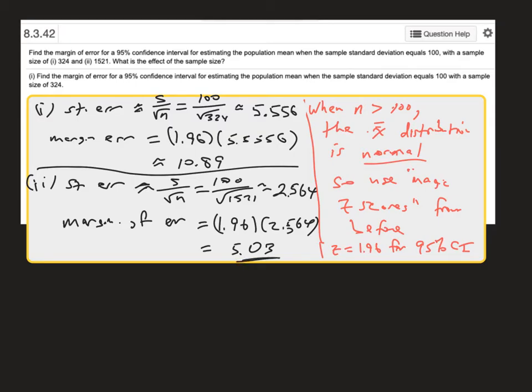So what's happened is the only difference in these two problems was the sample size. The margin of error for the first sample size was 10.89, and for the second sample size was 5.03. So notice that the margin of error got a lot smaller when the sample size got a lot bigger. That's really the takeaway. And so that's the third part of this question, the effect of sample size, is that as the sample size gets larger, the margin of error should get smaller.